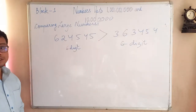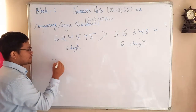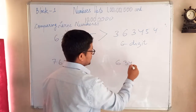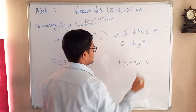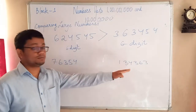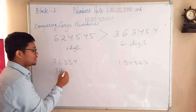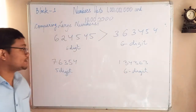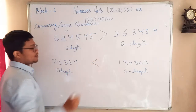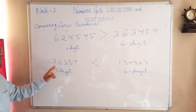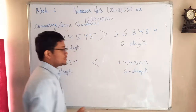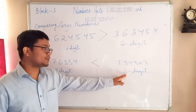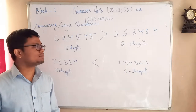Now just imagine if the digits of the numbers are different — for example, if I give you a five-digit number here and a six-digit number here. When a five-digit and a six-digit number are being compared, obviously the six-digit number will be bigger. You don't have to look at the first digits at all. By just counting the number of digits, you can say that the number which has more digits will be bigger.